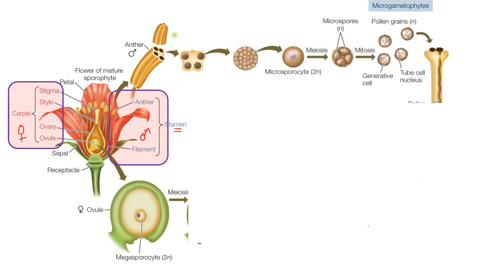Now let us see how pollen grains are formed. As you can see, there is a four-lobed structure, and inside each lobe there is diploid sporogenous tissue. The microsporocyte, or microspore mother cell, formed from the sporogenous tissue undergoes meiosis, forming four microspores. At first these remain together, but later get separated. The formation of microspores from the microspore mother cell is called microsporogenesis.